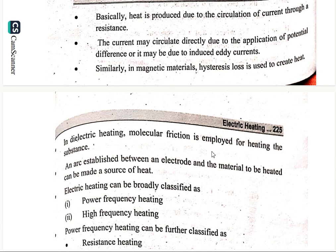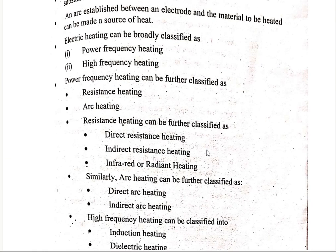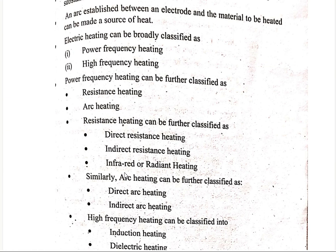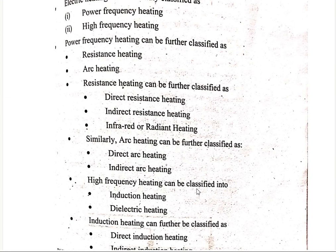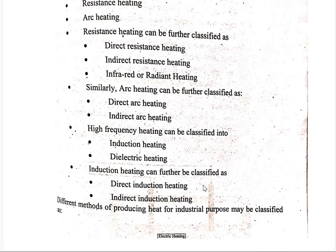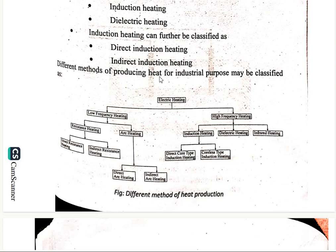Electric heating can be broadly classified into power frequency heating and high frequency heating. Power frequency heating can also be classified as resistance heating and arc heating. Resistance heating can be classified into direct resistance heating and indirect resistance heating, and infrared or radiant heating. Similarly, arc heating can be further classified as direct arc heating and indirect arc heating. High frequency heating can be classified into induction heating and dielectric heating.